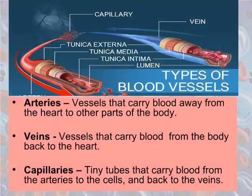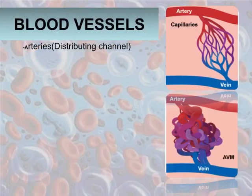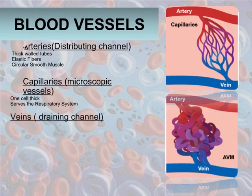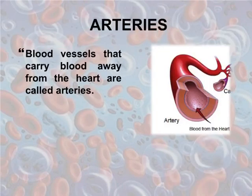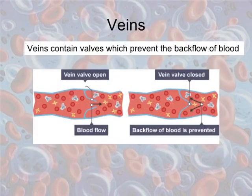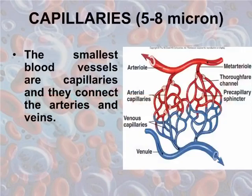Tiny tubes that carry blood from the arteries to the cells and back to the veins are capillaries. Arteries, also known as distributing channels, have thick-walled tubes with elastic fibers and circular smooth muscle. Capillaries are microscopic vessels, one cell thick, serving the respiratory system. Veins are draining channels. Arteries are the thickest blood vessels, carrying oxygenated blood. Veins contain valves which prevent the backflow of blood. The smallest blood vessels, capillaries, connect arteries and veins.